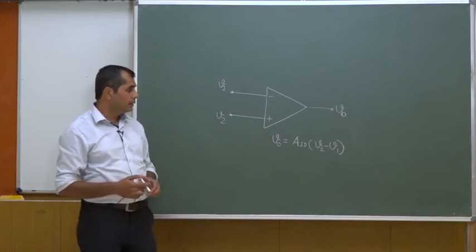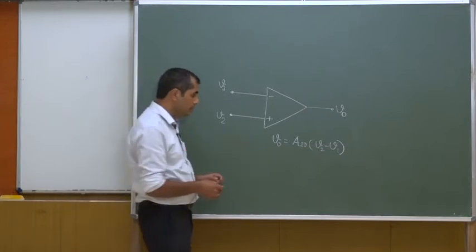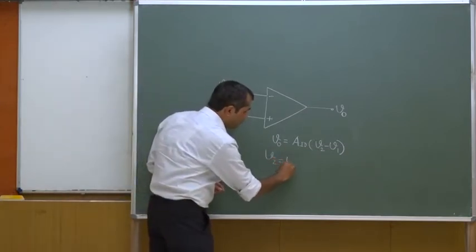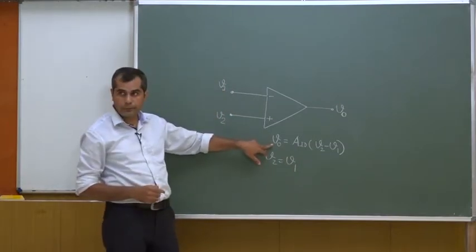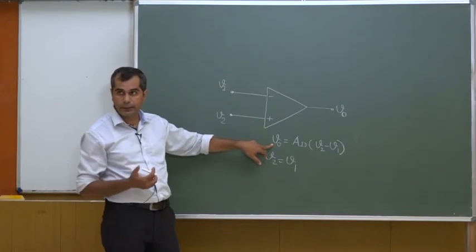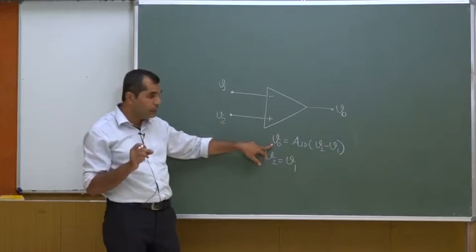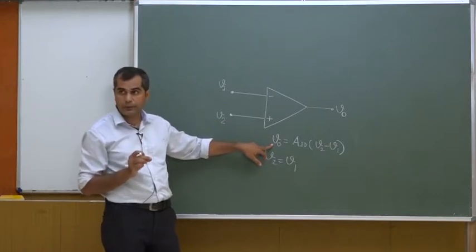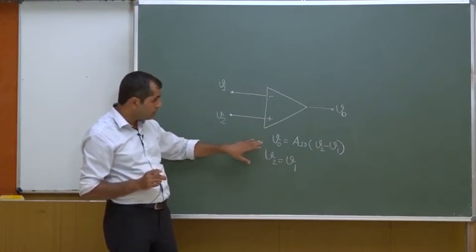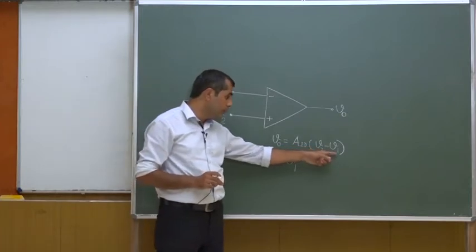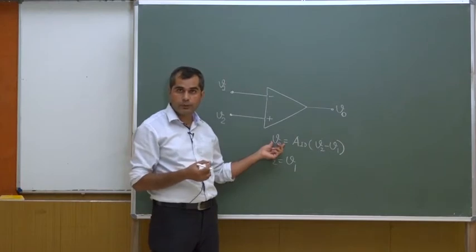Now let us consider that V2 equals V1 — what will happen? It is very clear that the output voltage becomes 0 even if the gain is very high. But this is true for an ideal operational amplifier only. If the operational amplifier is not ideal, then even if V2 equals V1, there may be a small V_out present at the output terminal.